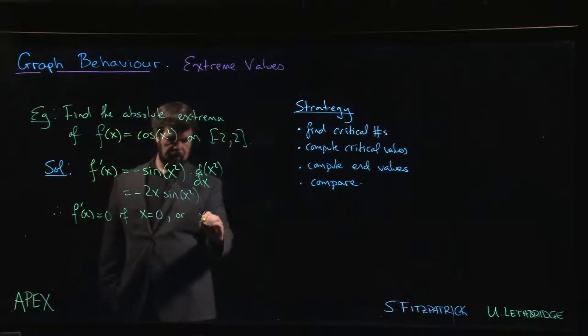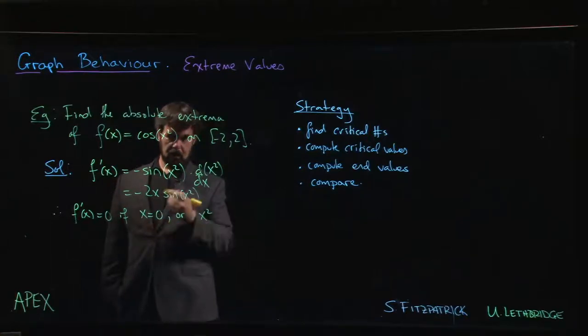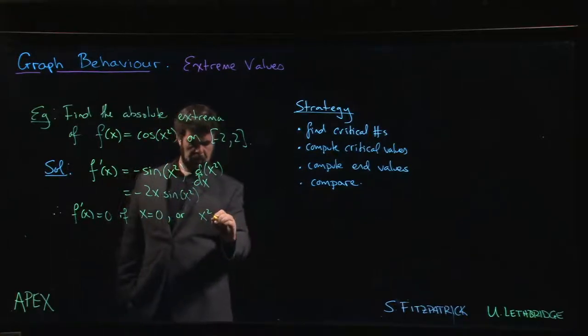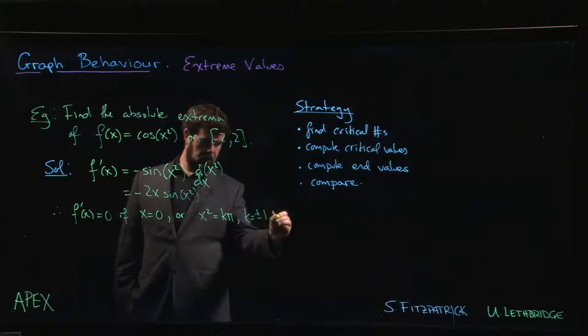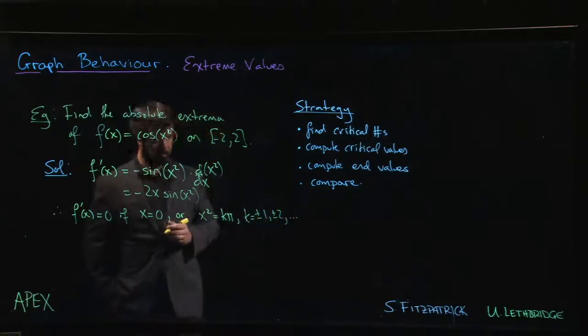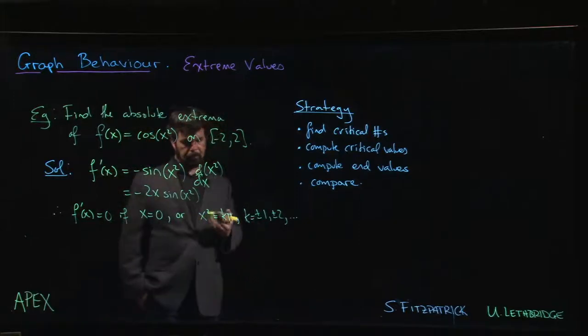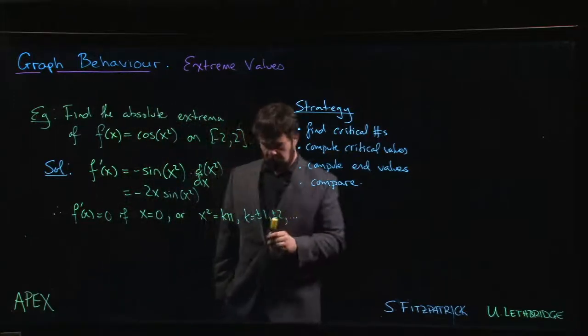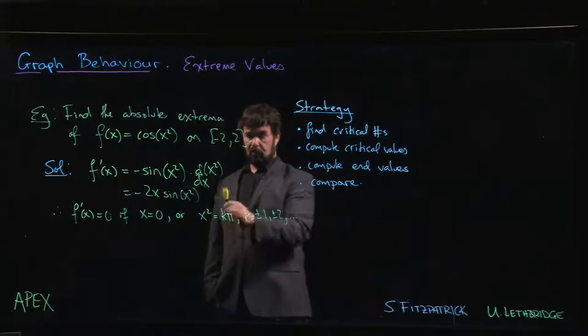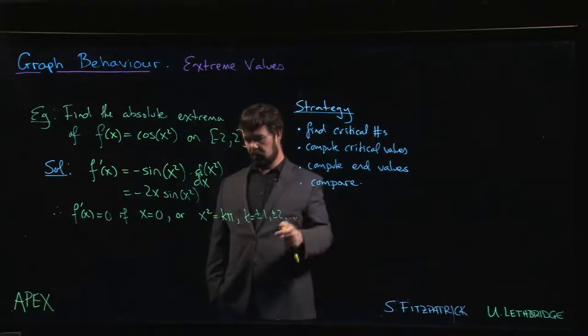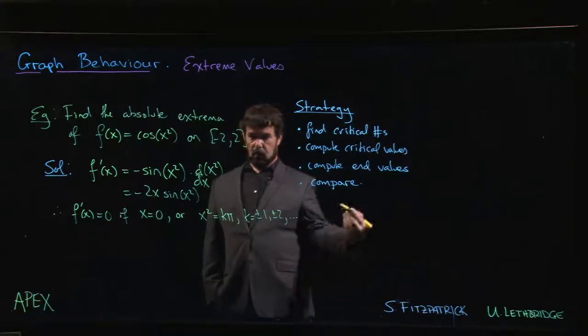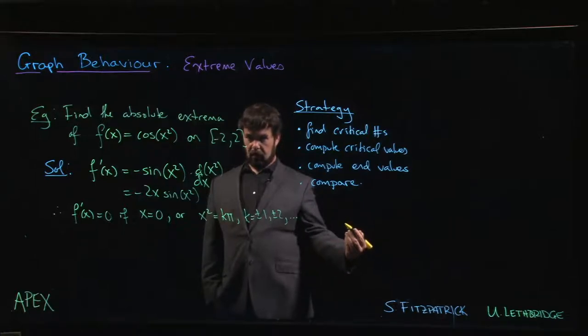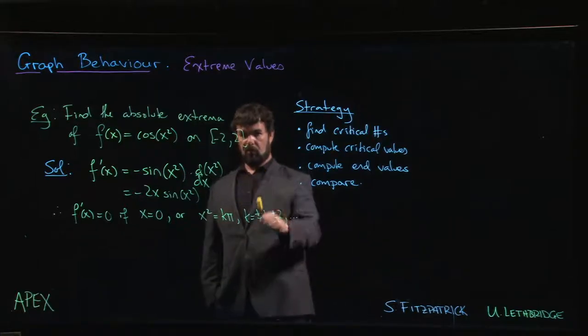Well we could have x squared equal to some multiple of pi. So k being plus or minus 1, plus or minus 2, and so on. Now if we went with plus or minus 2, so if it's plus or minus 2 pi, we see that we're going to be a bit big. So 2 times pi is a bit bigger than 6, and so the square root is certainly going to be bigger than 2, because 2 squared is 4, which is smaller than 6.